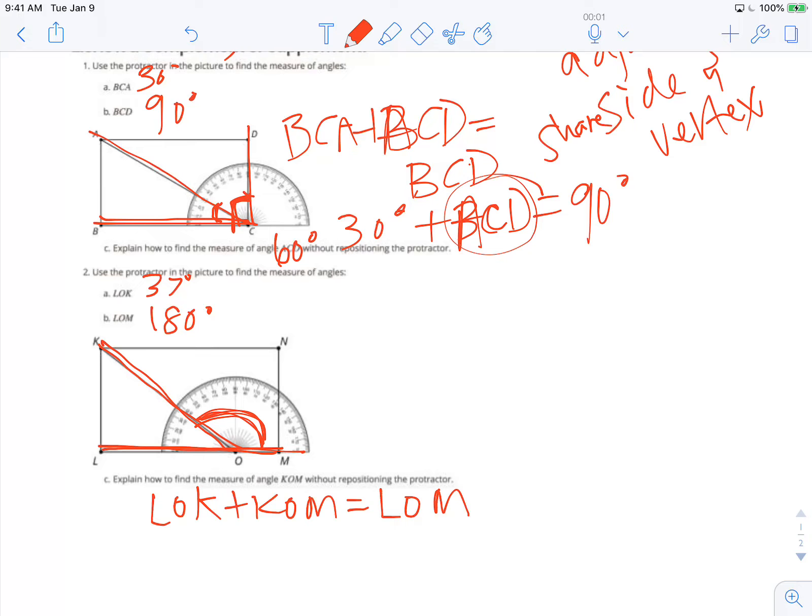I know the measure of angle LOK is 37 degrees, and I know the measure of angle LOM is 180 degrees. So, I can use the inverse operation of subtraction and subtract 180 minus 37 degrees to get the measure of angle KOM. So, I know that when I subtract that, I will get a measure of 143 degrees.